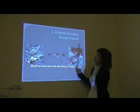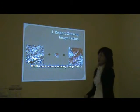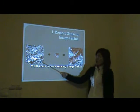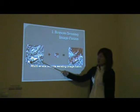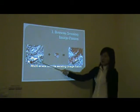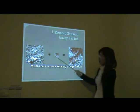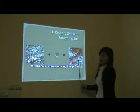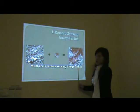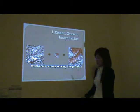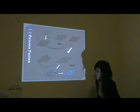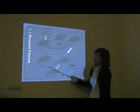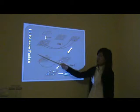First, remote sensing image fusion. It aims to fuse a high spatial resolution panchromatic image and a low resolution multispectral image to get a high resolution multispectral image. I propose two methods. First, Poisson Fusion.